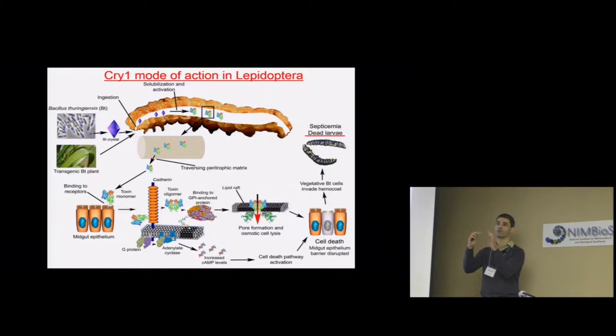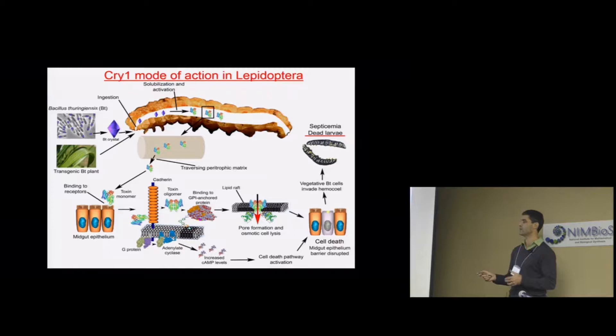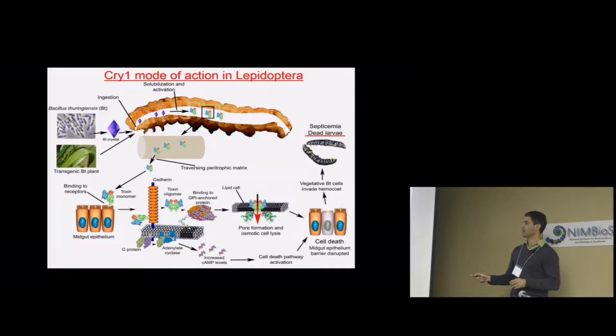We believe four toxin monomers are bound together to form a donut-shaped structure. This toxin oligomer then recognizes another type of receptor — proteins that are GPI anchored to the membrane. GPI means glycosylphosphatidylinositol, which is like an arm sticking the protein to the cell membrane surface. After the oligomer binds to these proteins, it inserts into the cell membrane and creates a pore, leading to osmotic cell lysis.